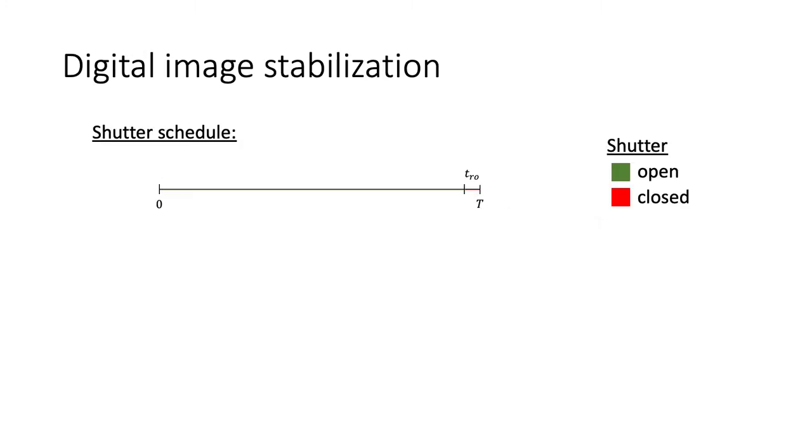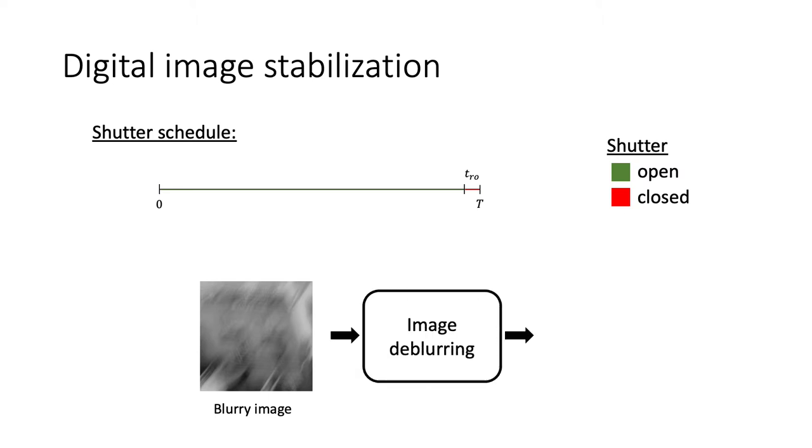Let us review digital image stabilization approaches by closely examining the shutter schedule of a moving unstabilized camera. We denote our time budget as capital T and assume some short time interval is needed to read each frame. A fully exposed image suffers from considerable motion blur, which is hard to mitigate using image-deblurring methods.